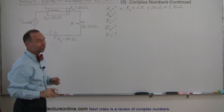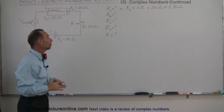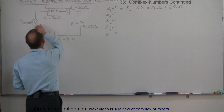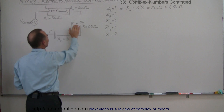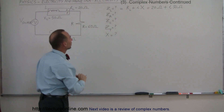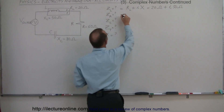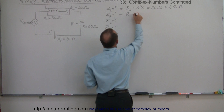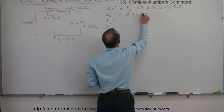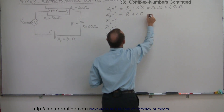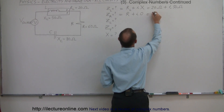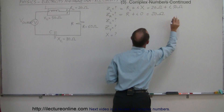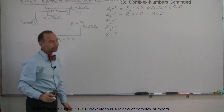For the resistor, that's easy. The resistor doesn't have an imaginary part — it is in phase with the source, and therefore it only has a real part. So the impedance of the resistor is simply the resistance, which is 20 ohms, with zero imaginary part. There's no imaginary part for the resistor.